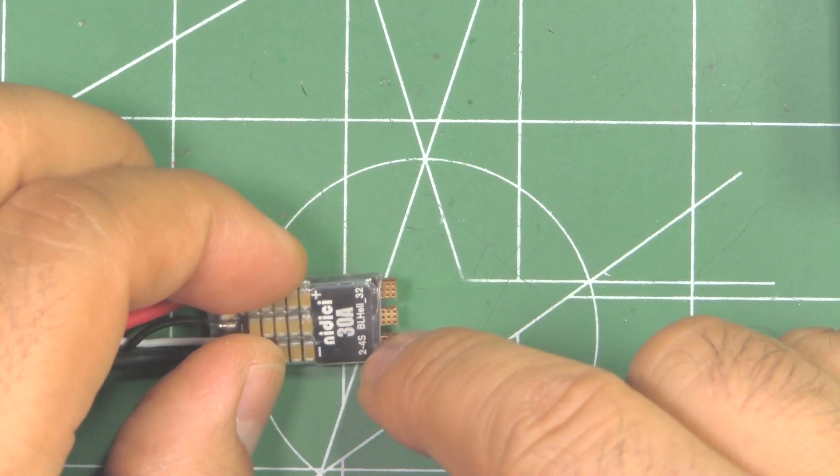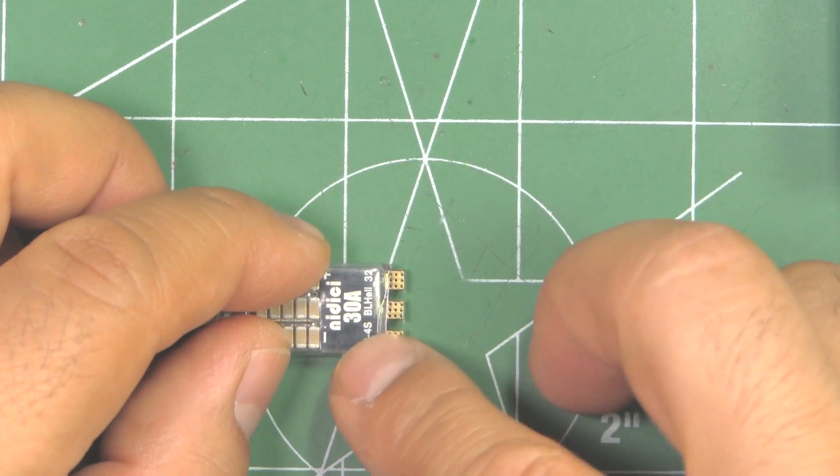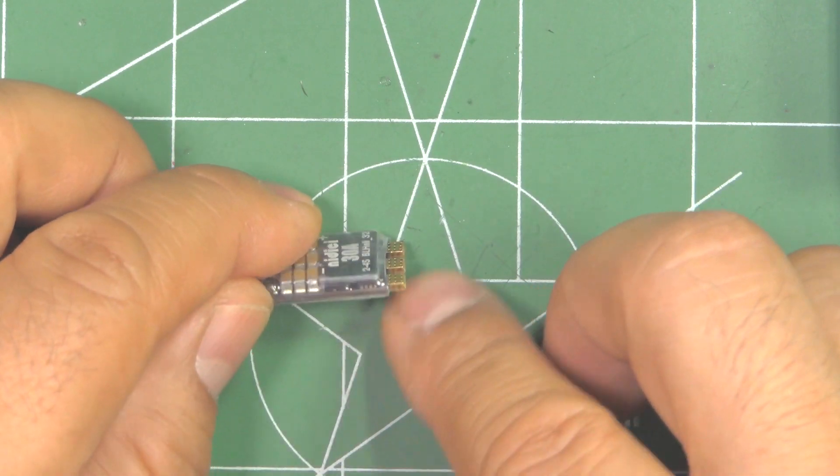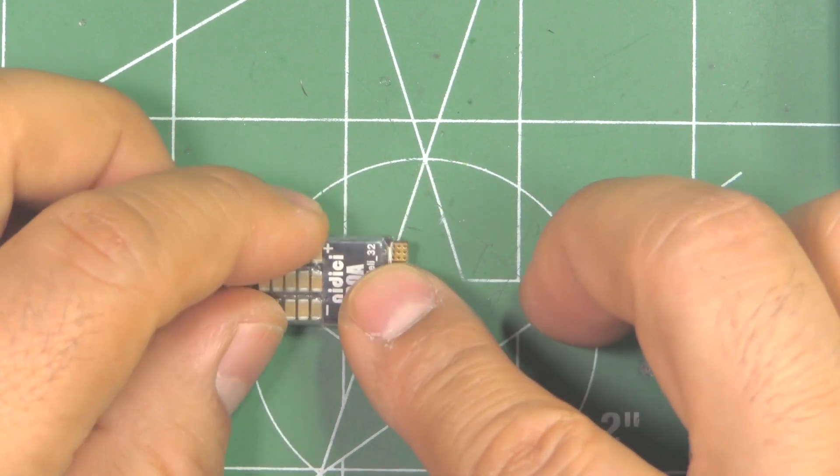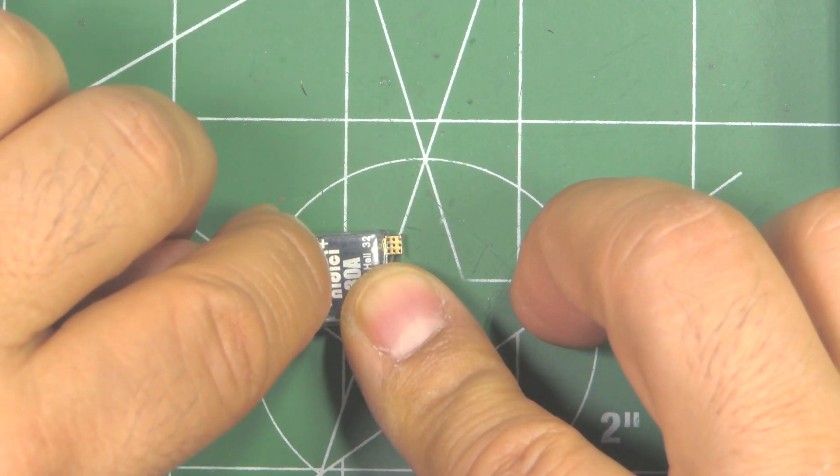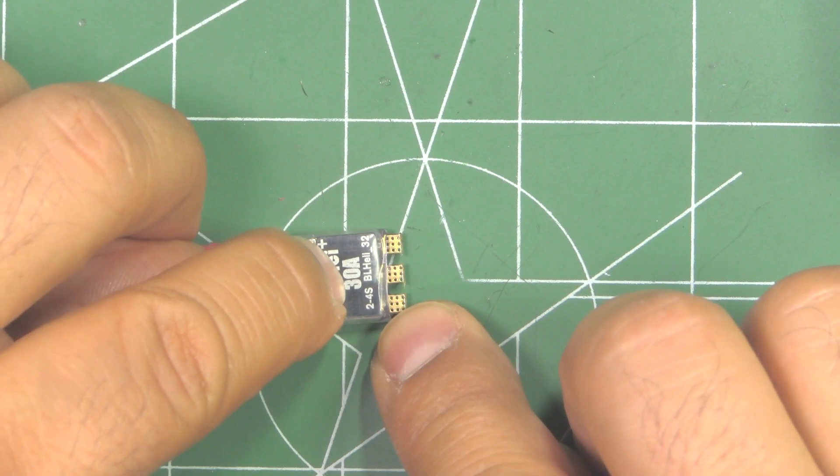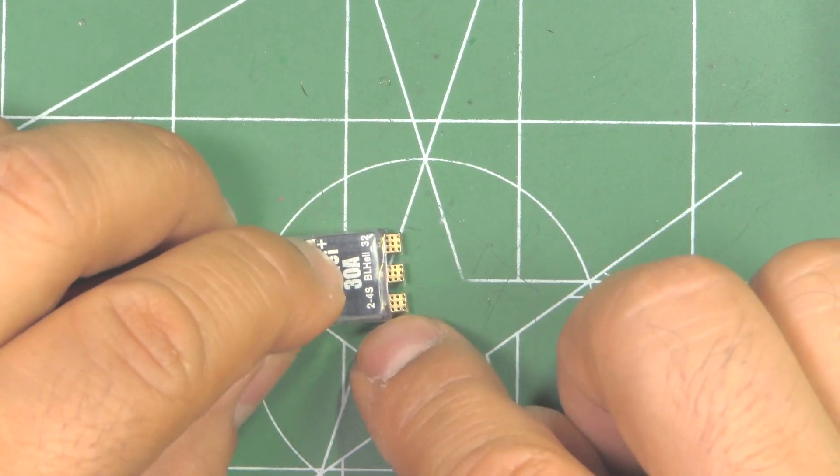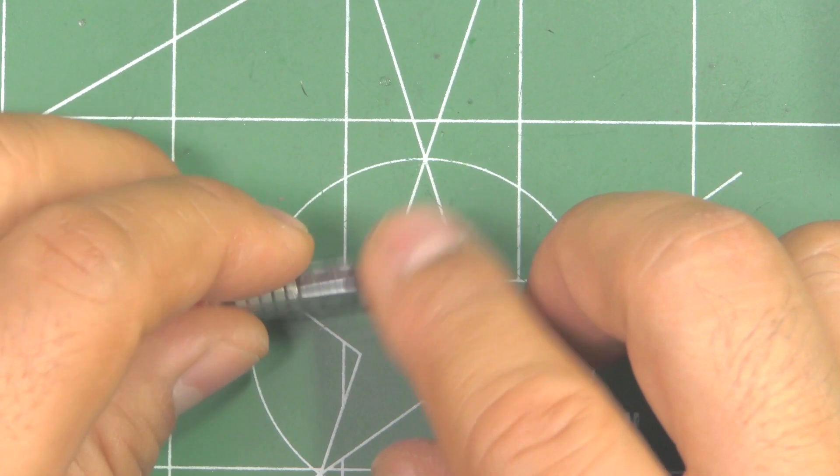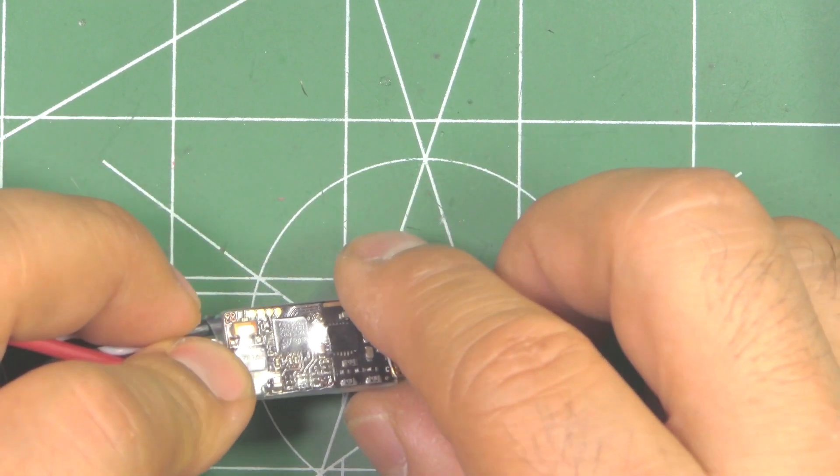But if you still want to keep the heat sink, make sure you don't shift it. Another thing you could do is unwrap it and maybe put a couple of blobs of epoxy at each corner, just a little bit of epoxy so it holds it in place better, and then rewrap it with heat shrink.